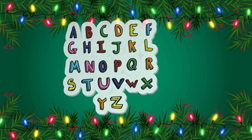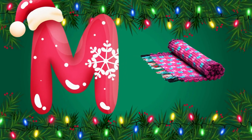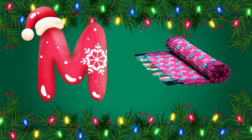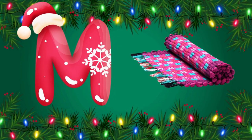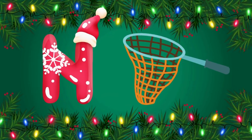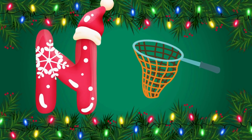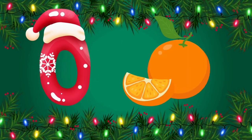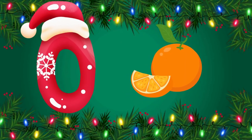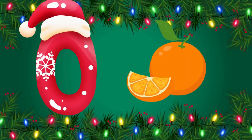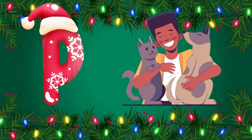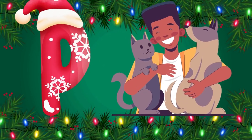M is for mat, m-m-mat. N is for net, n-n-net. O is for orange, o-o-orange. P is for pet, p-p-pet.